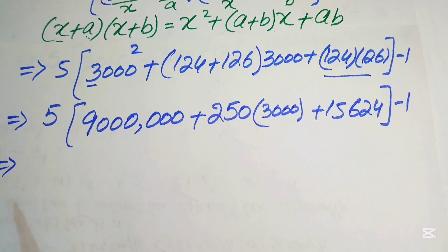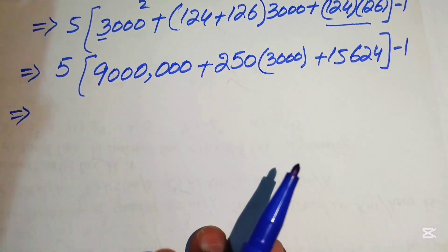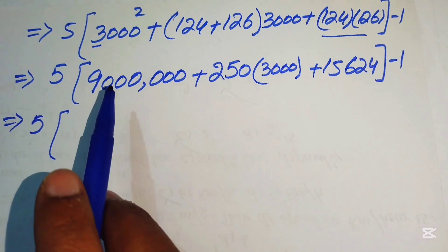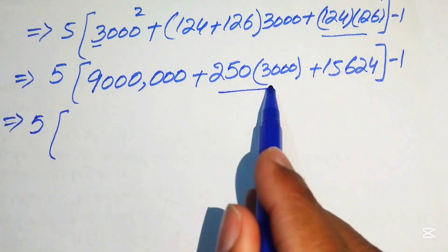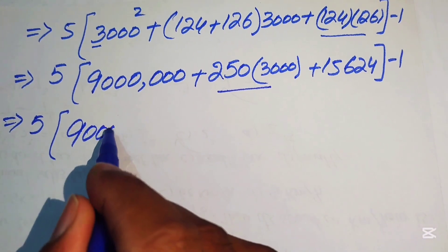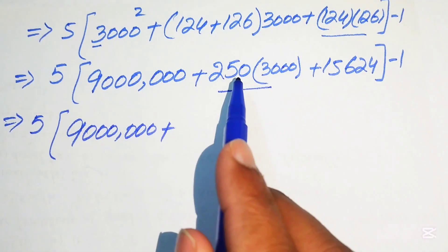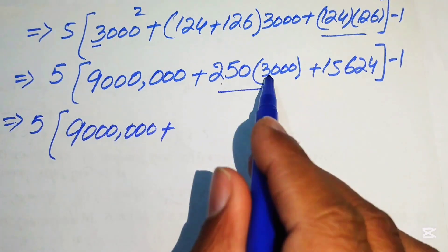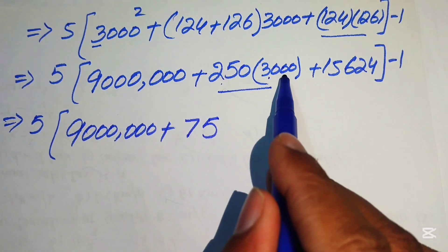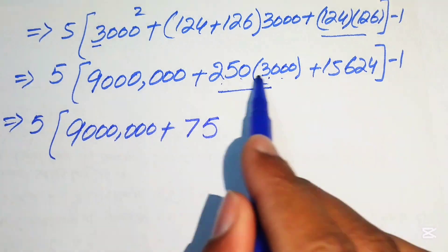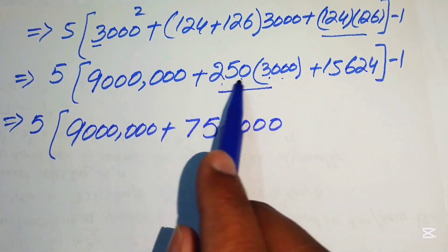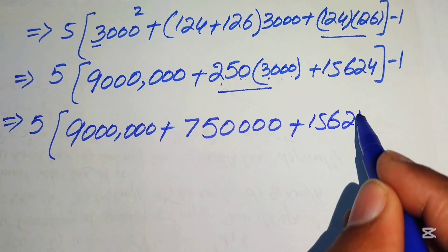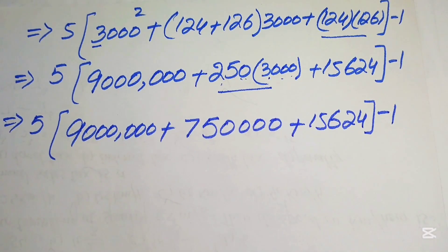So inside the brackets we have 9,000,000 plus 750,000 plus 15,624. Adding all these numbers together gives 9,765,624. The full expression is now 5 times 9,765,624, minus 1.